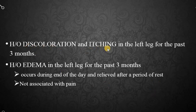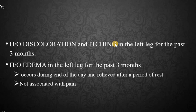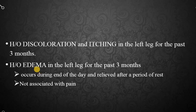There is discoloration and itching in the left leg for the past 3 months. Discoloration, itching and edema occur because of venous stasis and venous hypertension. Due to this, RBCs get extravasated and haemosiderin is deposited. Discoloration is due to haemosiderin deposition, itching is due to irritation of free nerve endings, and edema occurs due to venous stasis. The edema occurs at the end of the day and is relieved after rest. It is not associated with pain — this is important to distinguish from DVT, which causes painful edema.